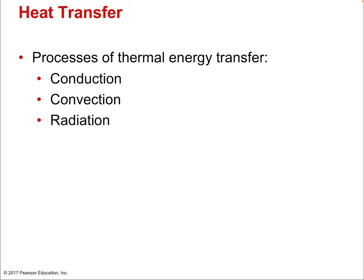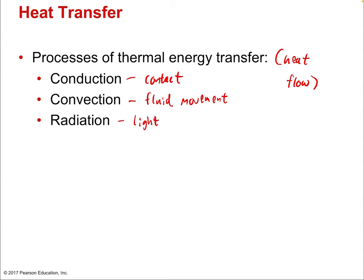The processes of thermal energy transfer — heat flow — are: conduction, which is all about contact; convection, which is all about fluid movement; and radiation, which is all about light. Radiation is a really big topic and here we're just focusing on how radiation allows heat to move from one point to another. The broader ideas of electromagnetic phenomena will wait for later lectures — we have a whole chapter on electromagnetic induction leading to light, and another on light itself.